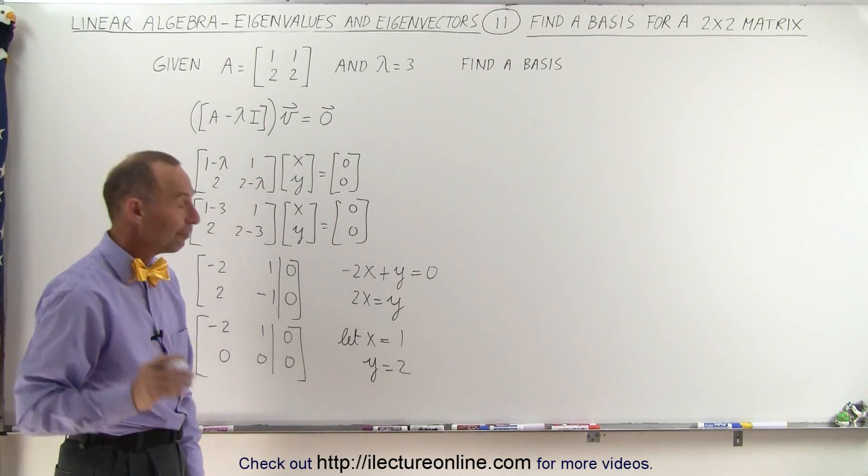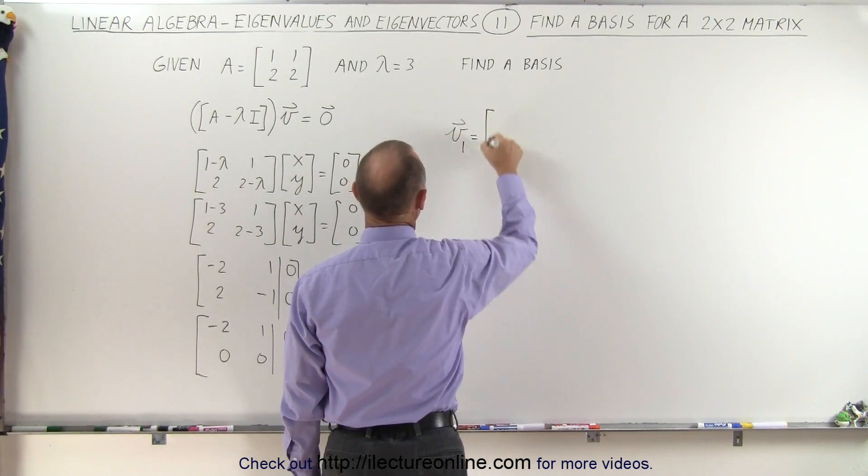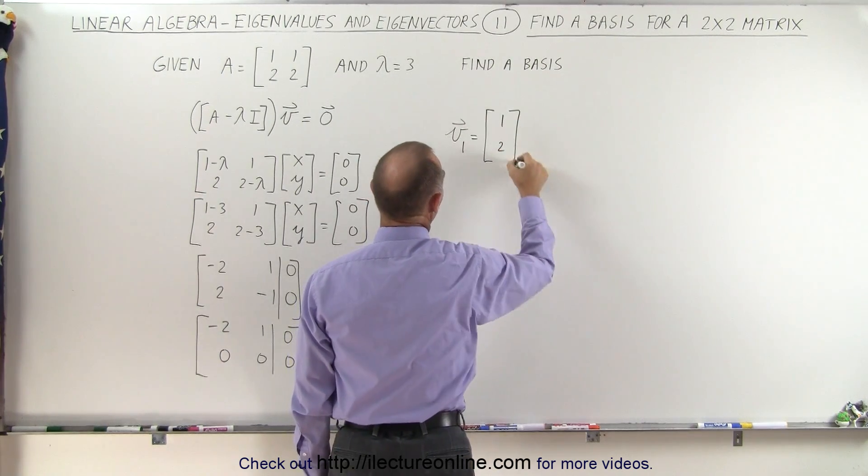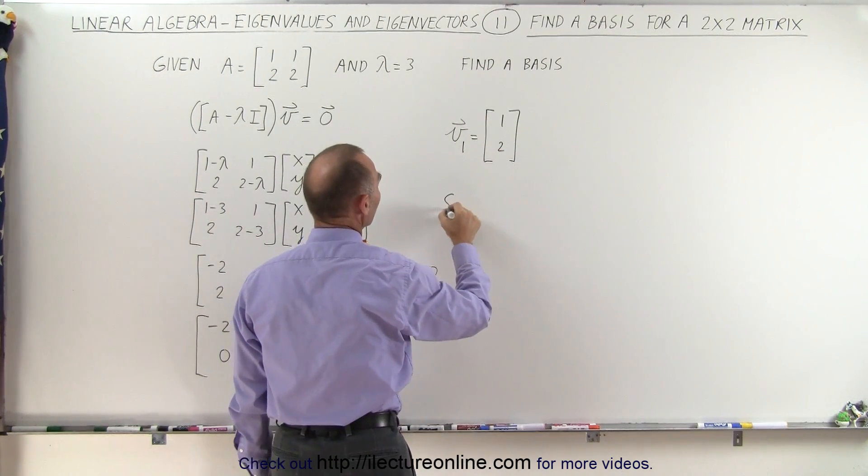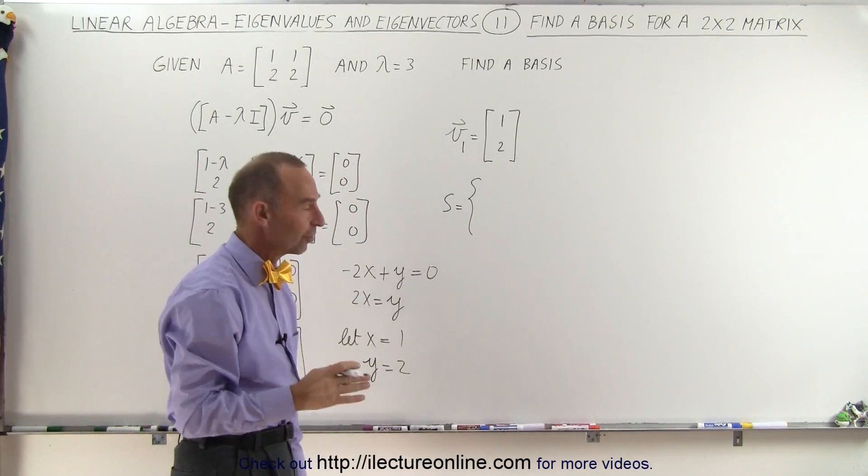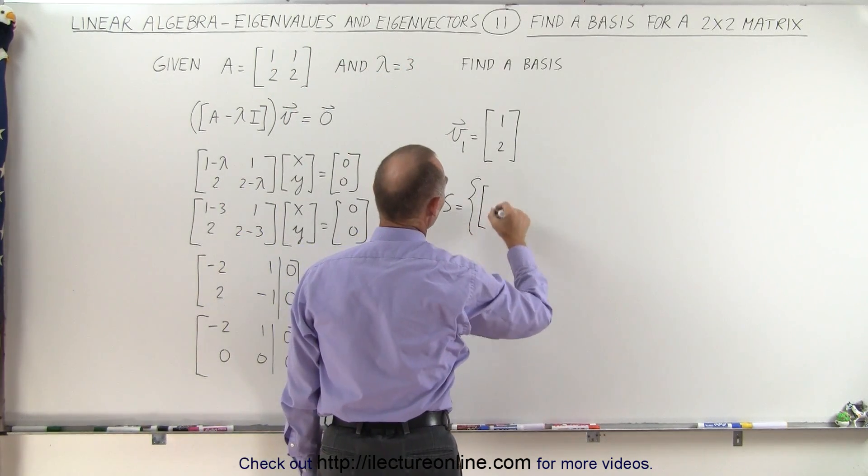And that's what defines our eigenvector. V1 can now be defined as the vector 1 and 2. And the set S, which is equal to all of the eigenvectors, which can be associated with this matrix and this eigenvalue, which is in this case only 1,